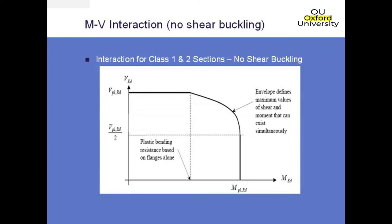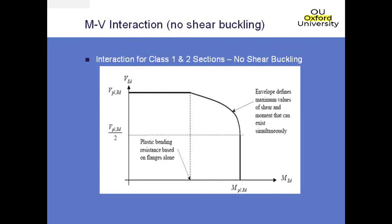This slide here shows the interaction between the moment and the shear. As you can see, there isn't actually that much interaction between the two. Below half the plastic shear resistance you have no interaction, and below the plastic bending resistance you don't have any interaction either. It's just in that intermediate zone where you do have some interaction, and that interaction is quite a lot better than it is in BS5400. The difference is less for class 1 and 2 sections, but it's bigger as we go along.